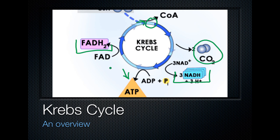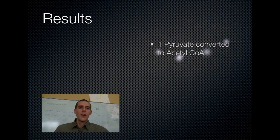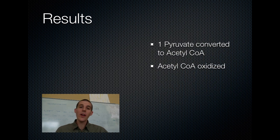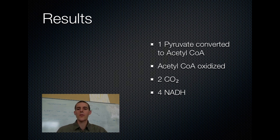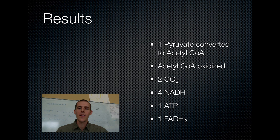We also get one ATP that is immediately ready for use in the body, and we get FADH2 — a cousin of NADH that also carries high energy electrons. Once the Krebs cycle is complete, our glucose molecule has been fully oxidized — it is now nothing more than water and carbon dioxide. All the energy that was contained in it is being carried off to the electron transport chain or has already been given off as ATP. To summarize Krebs results per pyruvate: two CO2s, four NADHs (including the NADH from acetyl-CoA conversion), one ATP, and one FADH2.